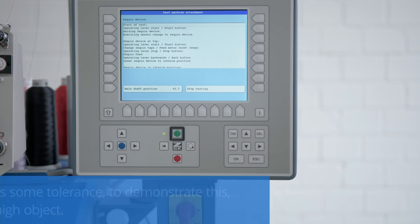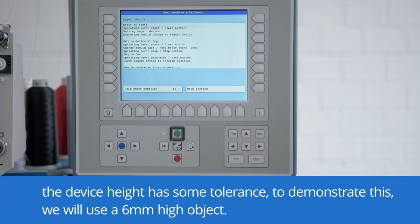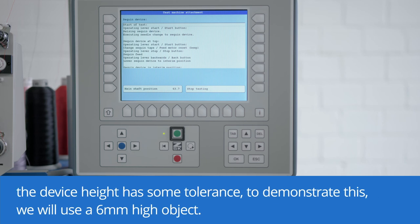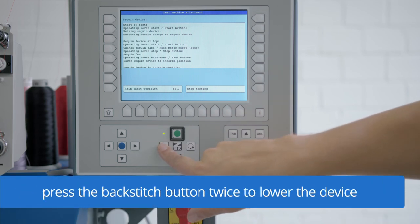Next, we need to set the height of the device. It has to be 5 millimeters above the stitch plate. To lower the device, press the backstitch button twice.